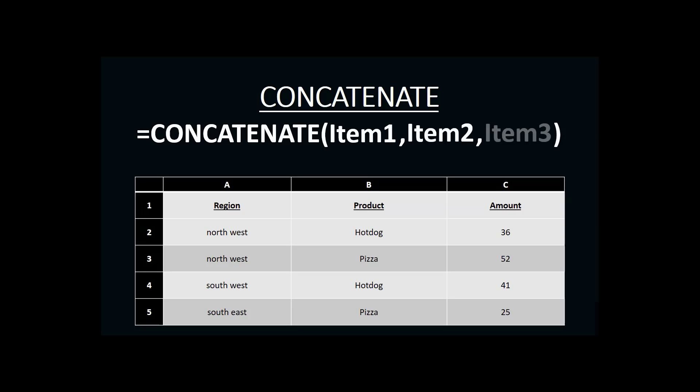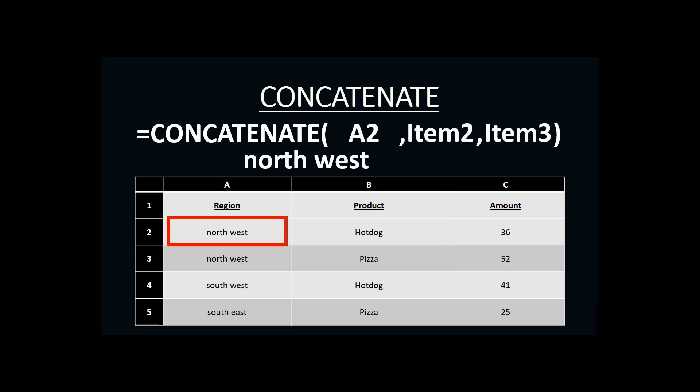Our first item is the name of our region in column A — specifically our northwest region in A2. We then include a comma and move on to our second item, which will be the dash that separates the region from the product. When we add the dash, we need to remember to put it in quotation marks, because this is text, not a cell reference, and any time we use text in Microsoft Excel functions we put that text in quotations.